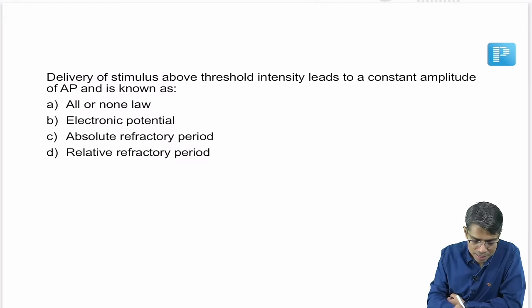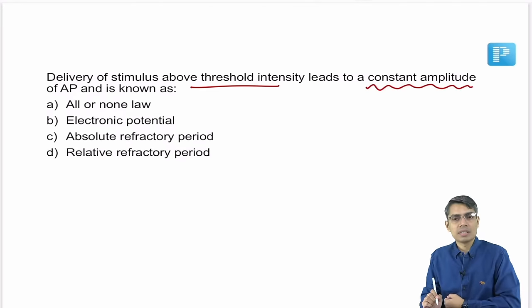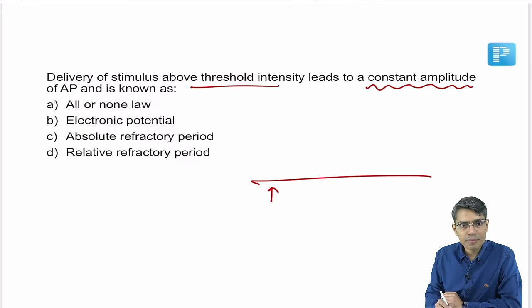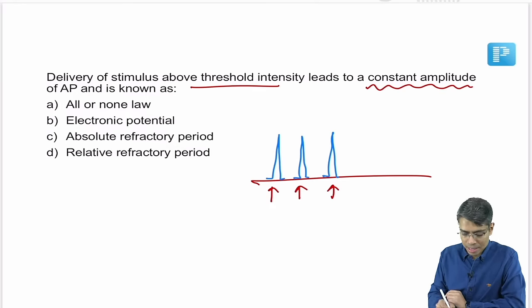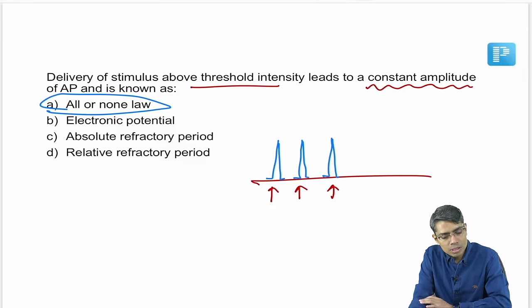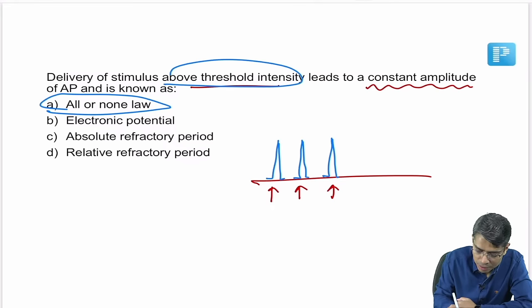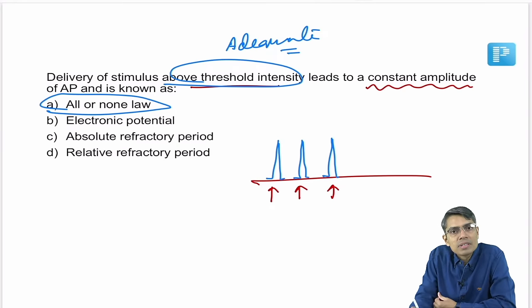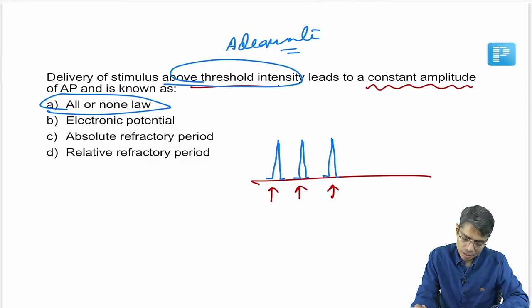Next: delivery of a stimulus above threshold intensity leads to a constant amplitude action potential. This describes the all-or-none law. An adequate stimulus above threshold will produce an action potential with maximum amplitude. No matter how many times you stimulate, the height of the action potential remains the same.